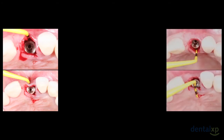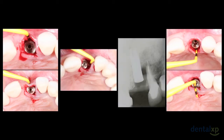A platform-switching implant was inserted. Take a look at the lack of soft tissue stability. We evaluated all the defects to be reconstructed — in the buccal, palatal, and distal aspects — and we can see here the height in the distal aspect to be reconstructed.